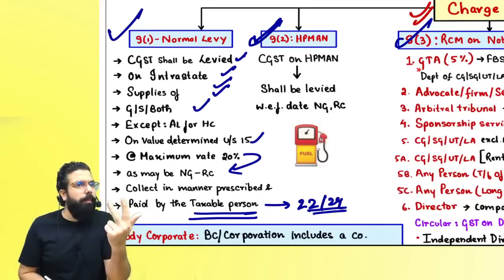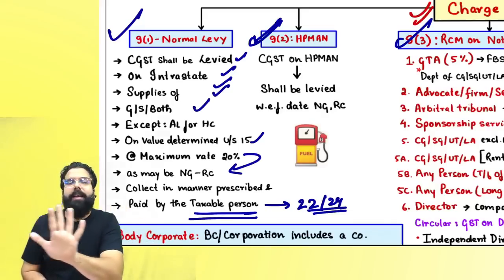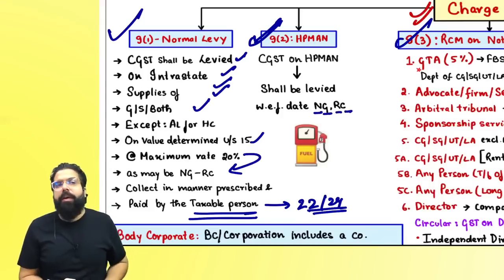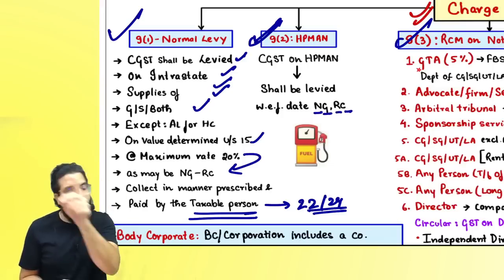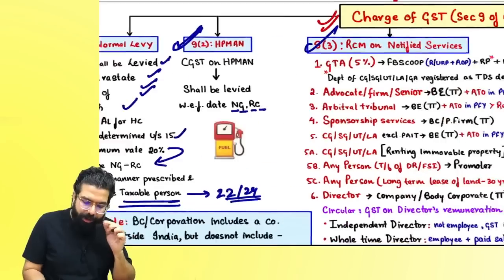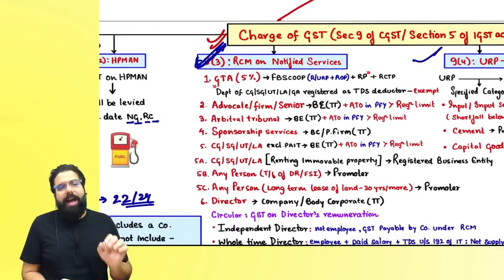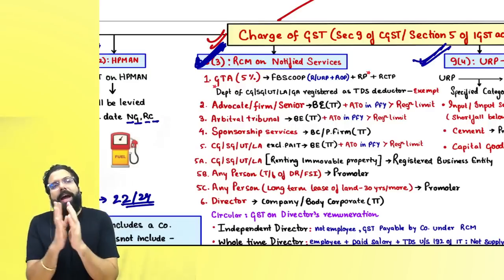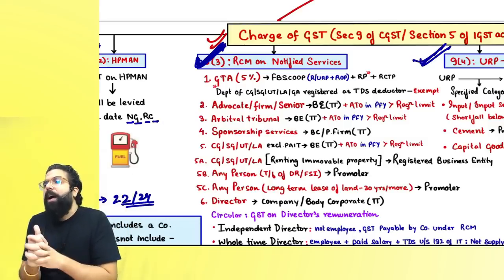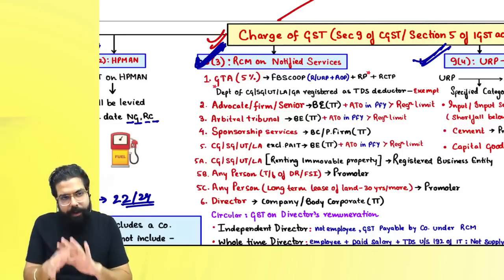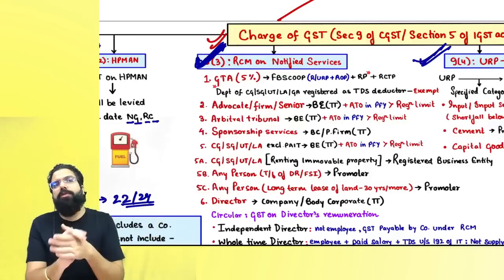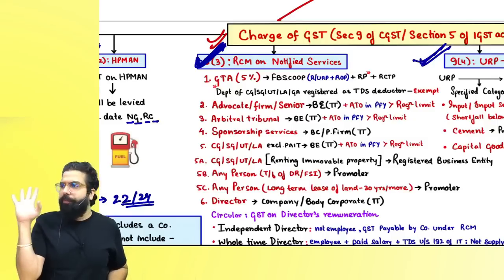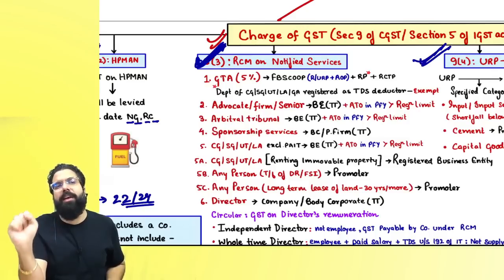Section 9(2) covers five petroleum products: high-speed diesel, petroleum crude, motor spirit, aviation turbine fuel, and natural gas (HP man). GST on these five items will be levied from a date to be notified by the government on the recommendation of the Council. As of now, no GST is applicable on these five items. Sections 9(3) and 9(4) deal with Reverse Charge Mechanism (RCM). Section 9(3) states the government will notify goods and services on which GST must be paid under RCM always by the recipient.